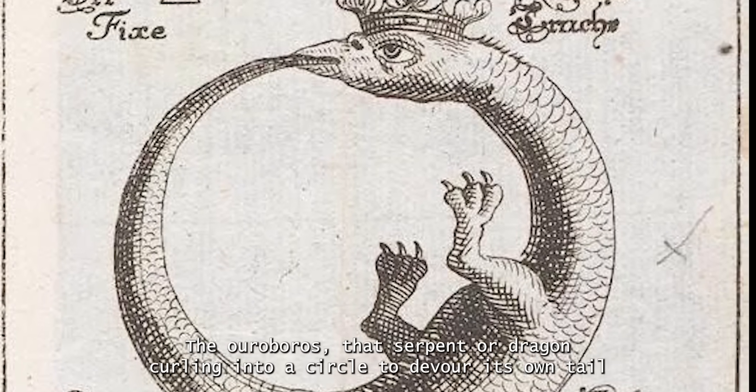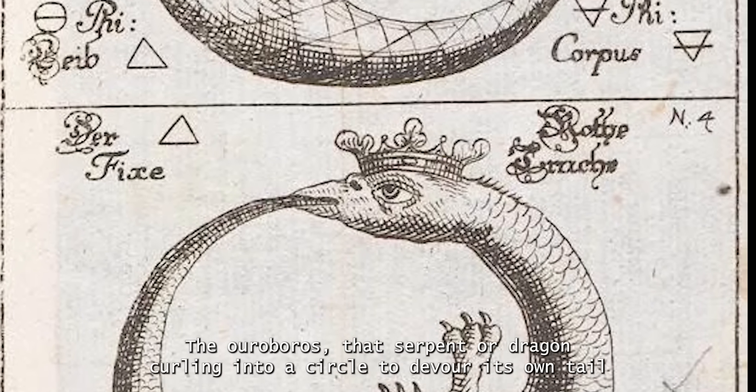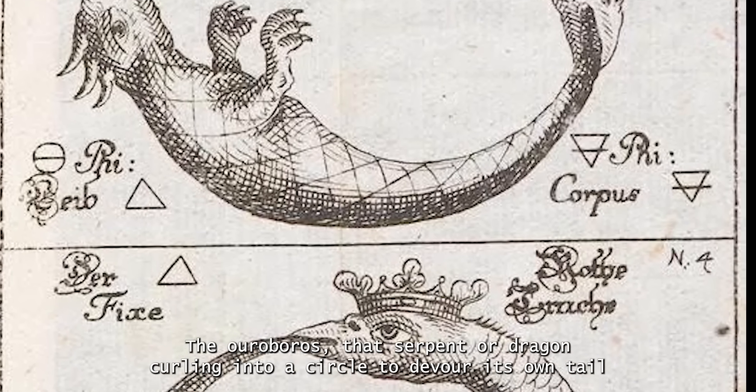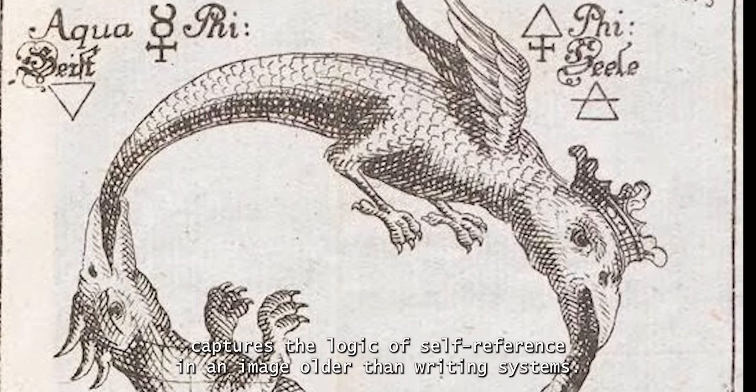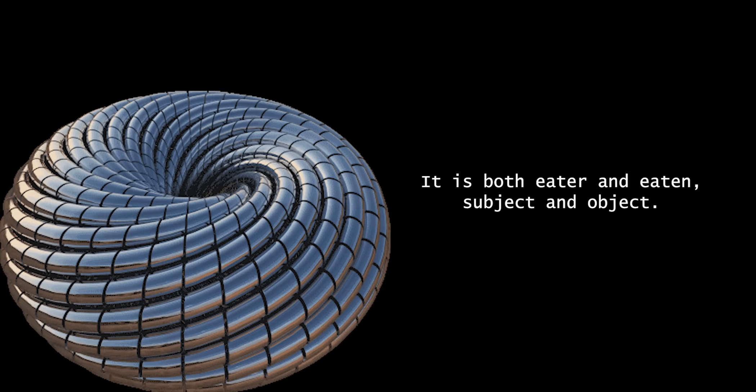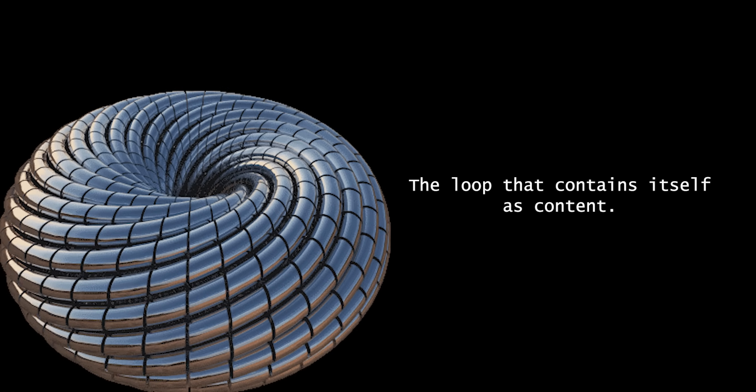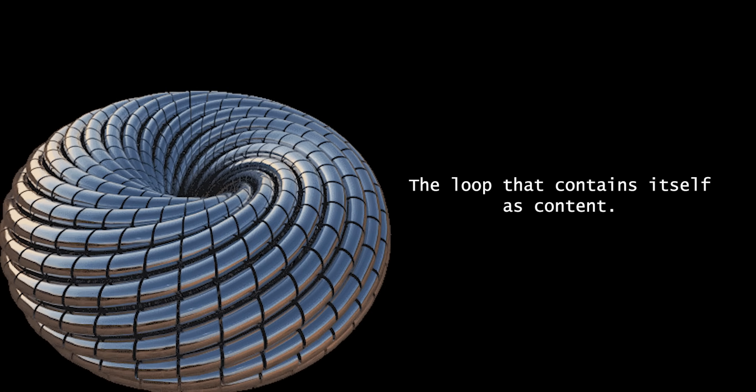The Ouroboros, that serpent or dragon curling into a circle to devour its own tail, captures the logic of self-reference in an image older than writing systems. It is both eater and eaten, subject and object, the loop that contains itself as content.